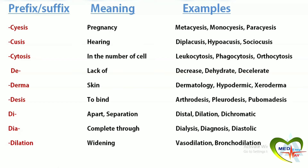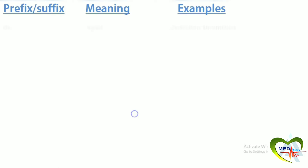Dilation means widening. Vasodilation is the widening of blood vessels. Bronchodilation is the widening of the bronchi of the lungs. Dis means apart, like dissection — the dissection of a body, or the relation of two distinct alternatives.